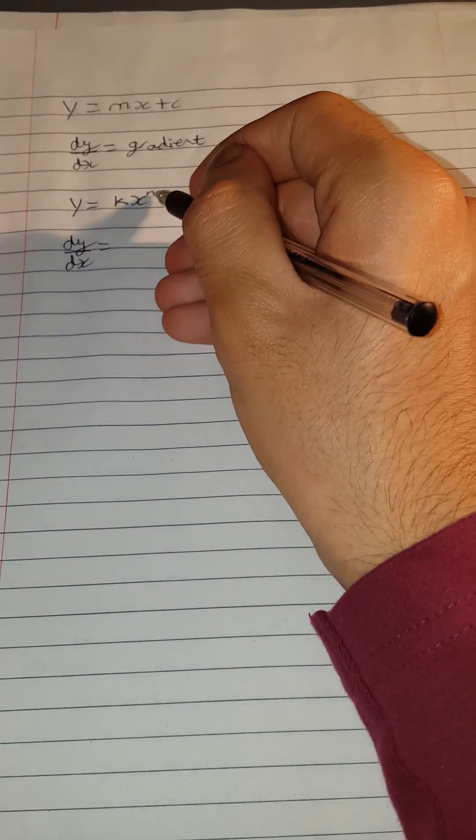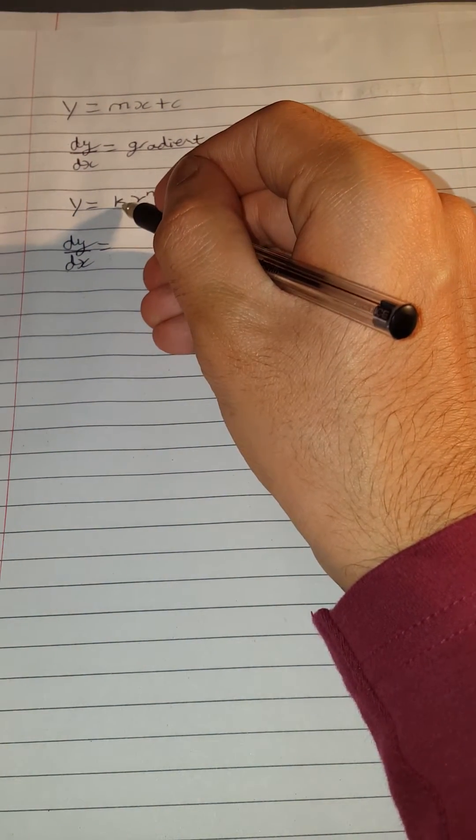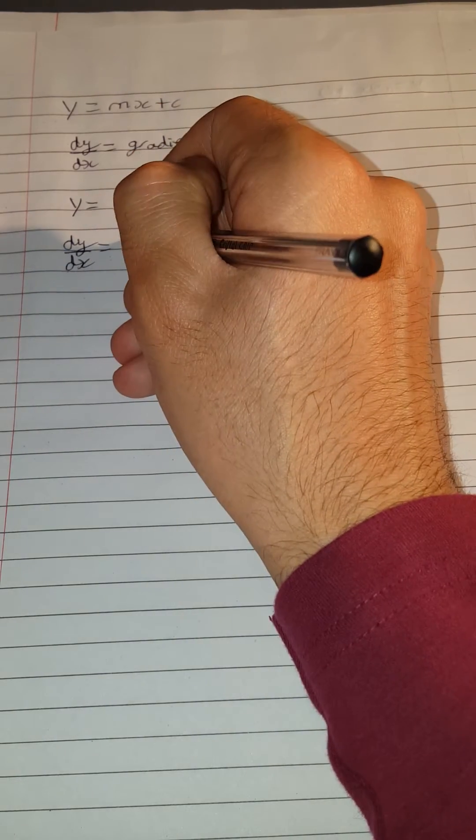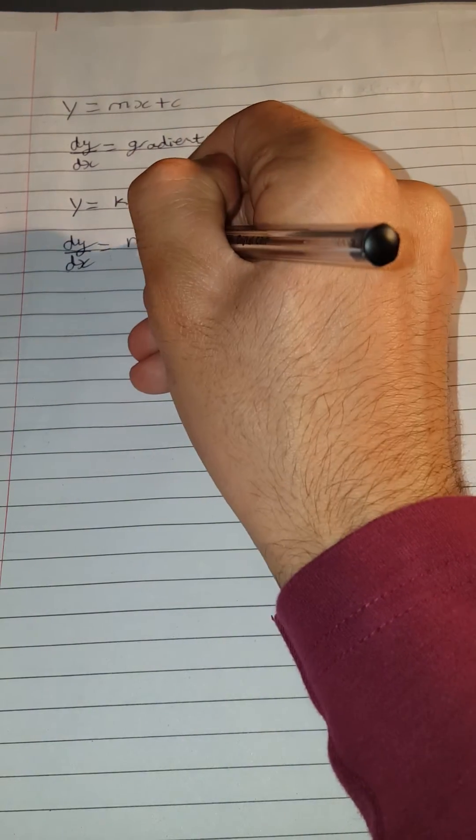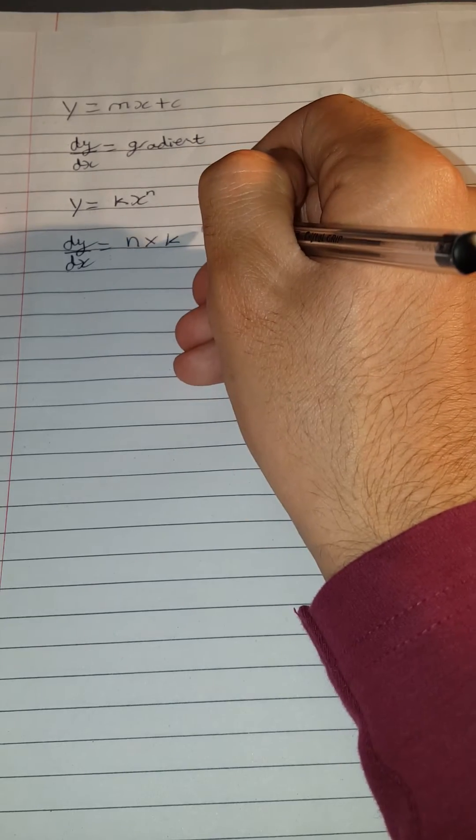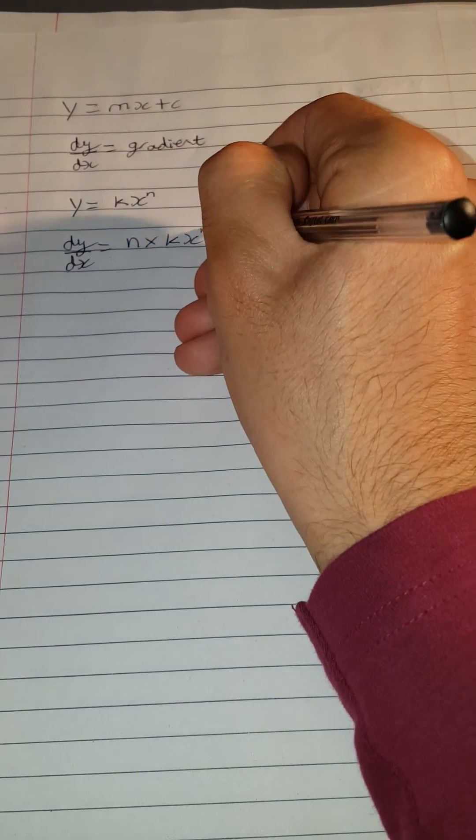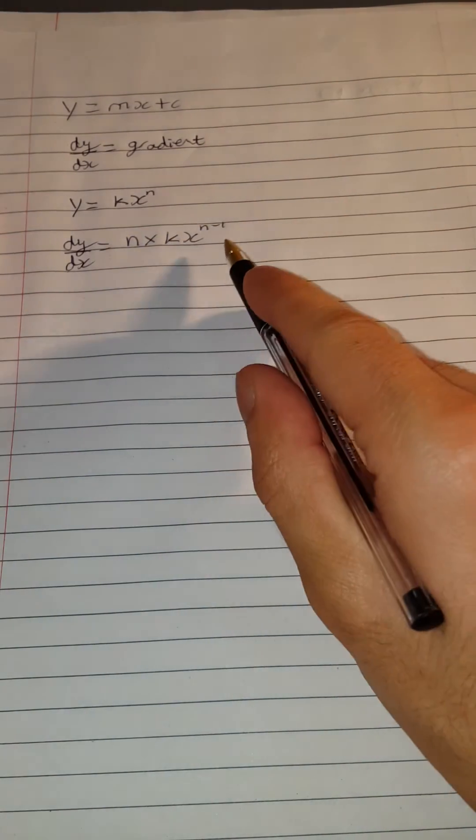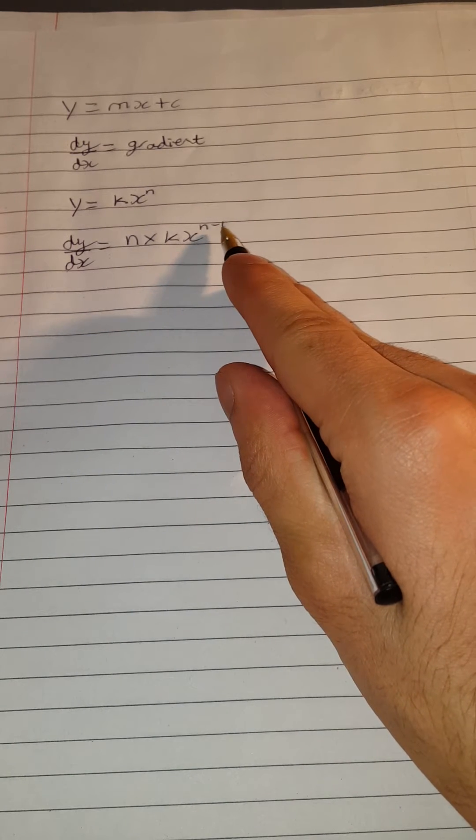What you do is you multiply the power by the x and the number next to it, so it would become n times k, x to the n minus 1. So you subtract 1 from the power. You always have to do this.